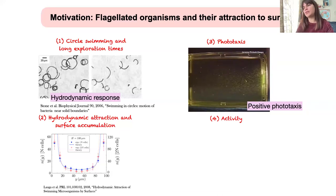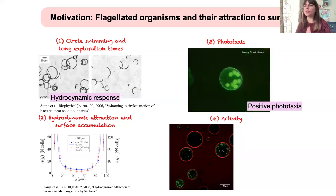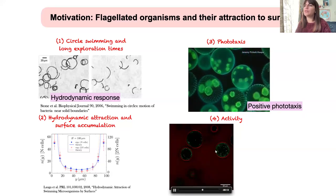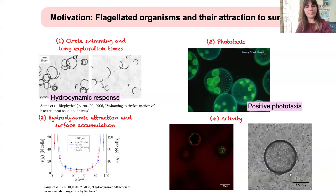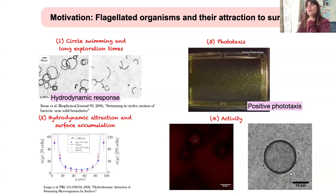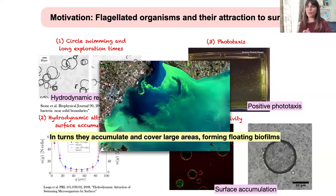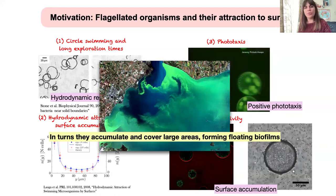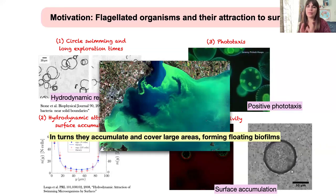Due to the activity itself, we know that active particles or microswimmers tend to accumulate at interfaces or surfaces — like bacteria in green inside micro-sized droplets, where you can see they are mostly accumulated at the interface. When microswimmers accumulate, they can cover large areas and form floating biofilms.